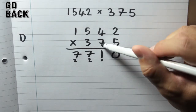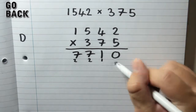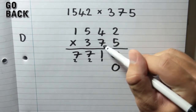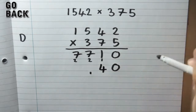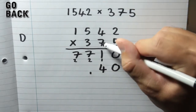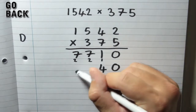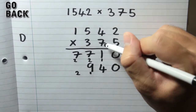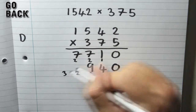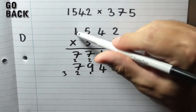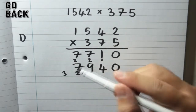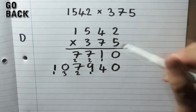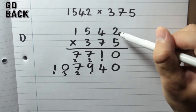Now we're going to multiply by the 7, which is really 70, so I put a 0 there first. 2 times 7 is 14 — little 1 there, big 4 there. 4 times 7 is 28, add the 1 is 29. 5 times 7 is 35, add the 2 is 37. 1 times 7 is 7, add the 3 is 10 — so a 0 and a 1 which we bring straight up. So now we have done 1,542 multiplied by 70.